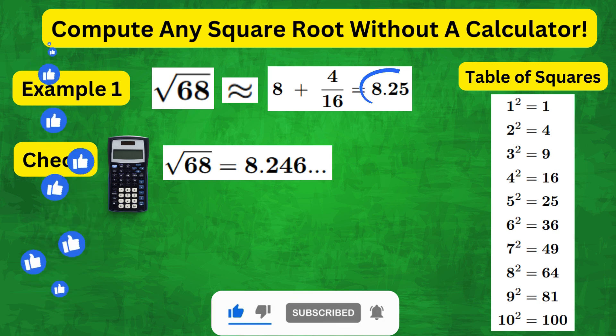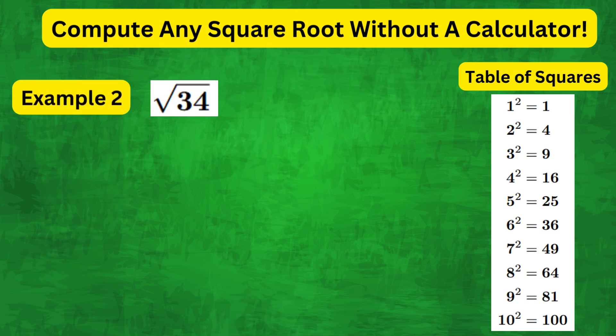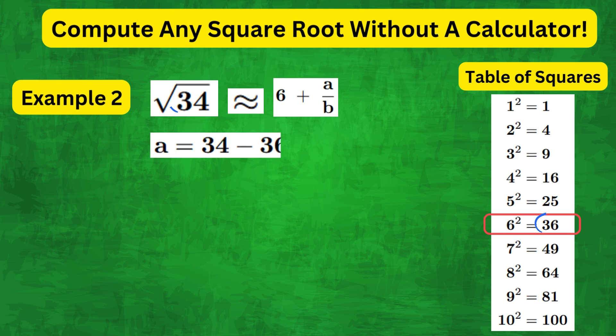Let's try this method on square root of 34. In this case, the closest square number is 36. So, we write 6 plus some correction fraction. The numerator of this fraction is 34 minus 36, which is minus 2, negative in this case.